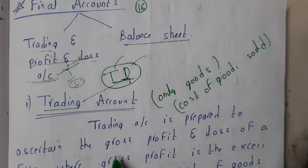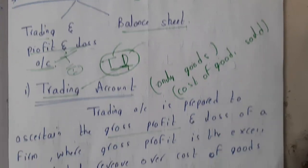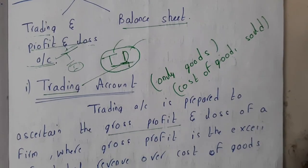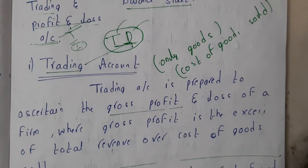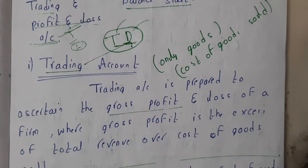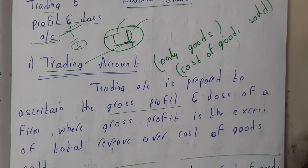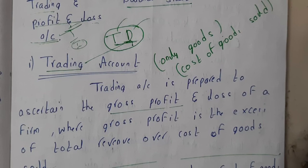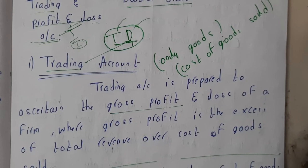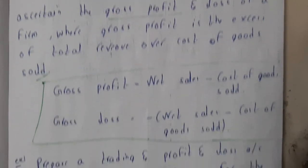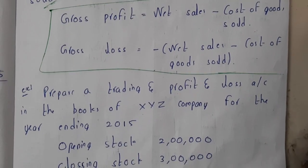The trading account is prepared essentially to find the gross profit and gross loss of a firm. Once we go through the problem, you'll have a clear idea.